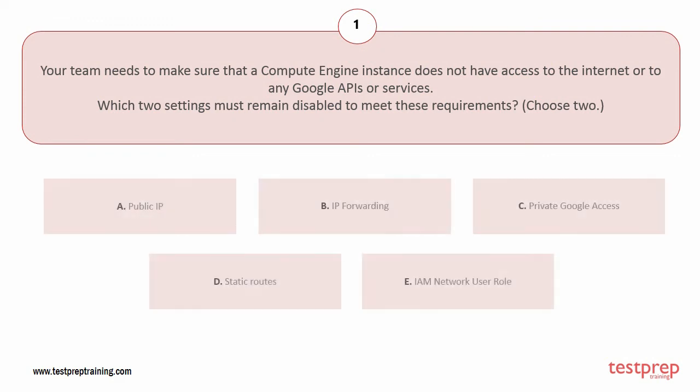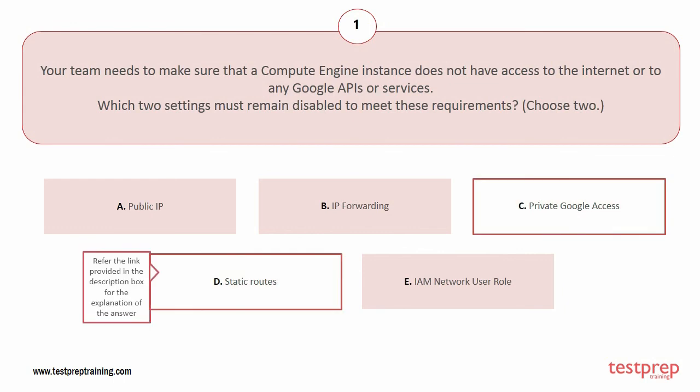Your options are: A) Public IP, B) IP Forwarding, C) Private Google Access, D) Static Routes, E) IAM Network User Role. The correct answers are option C and D.